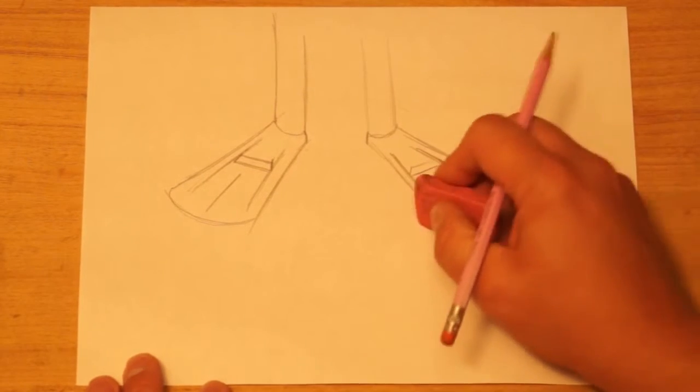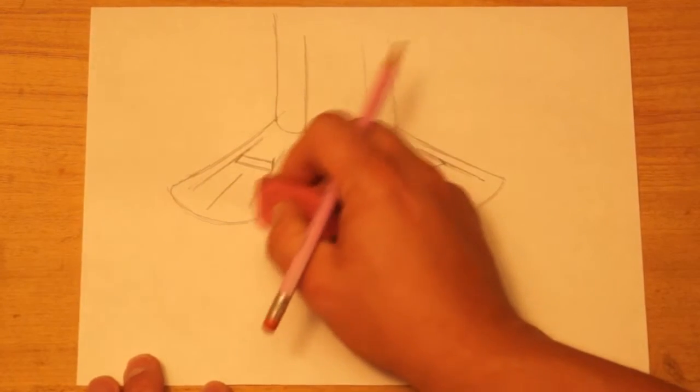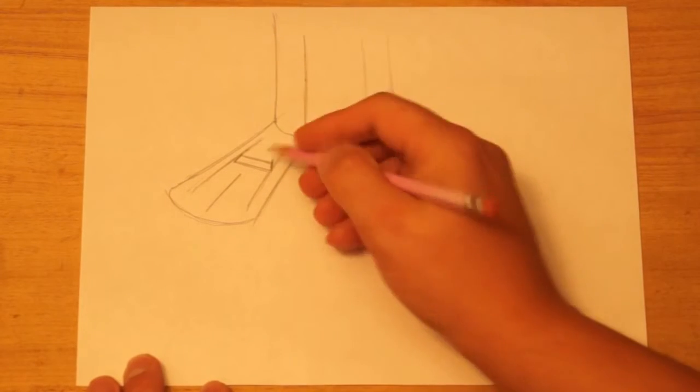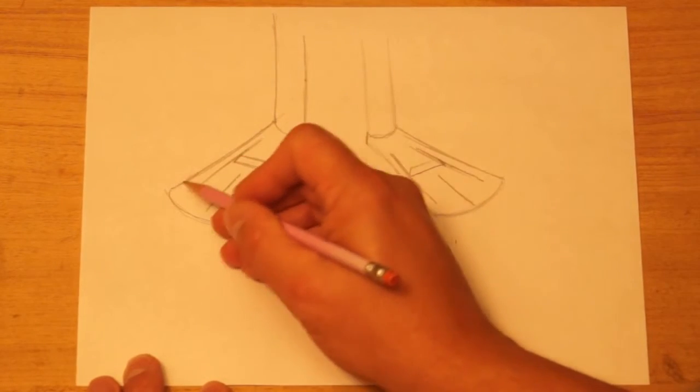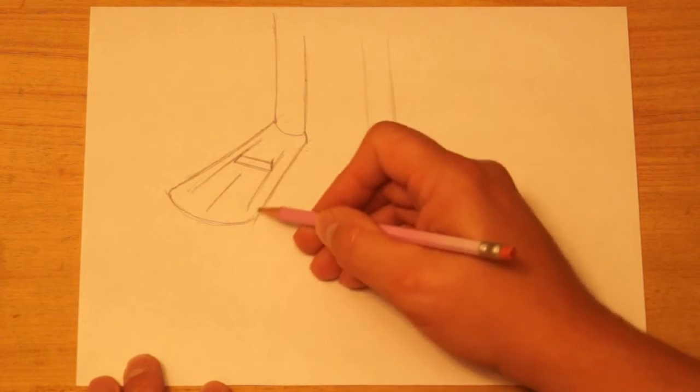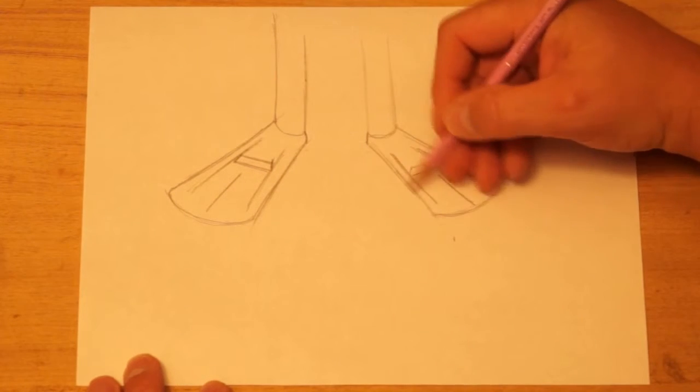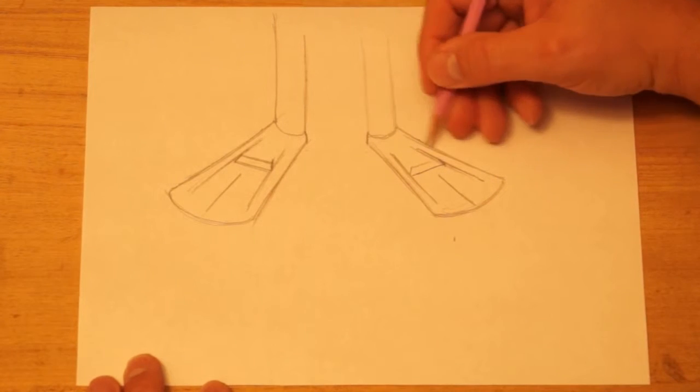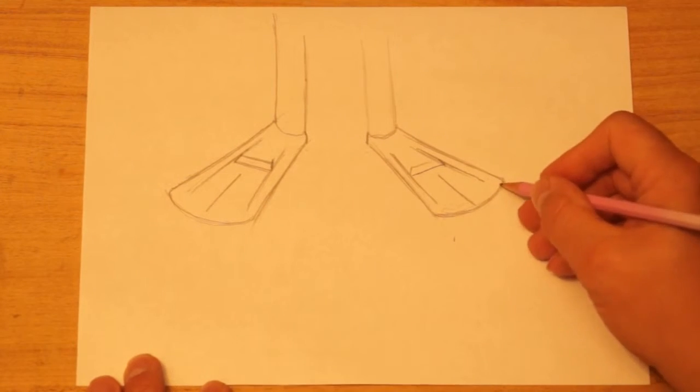Okay, just have to clean up a few edges here. And then you can darken, after you've got your drawing cleaned up, you can darken in any lines that need to be darkened. And this is it. This is our drawing for today, swim fins or flippers.